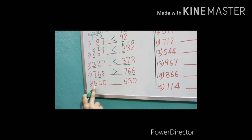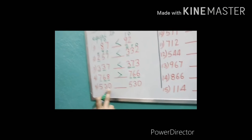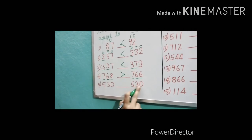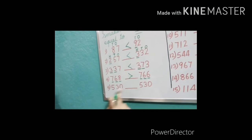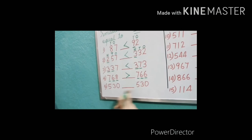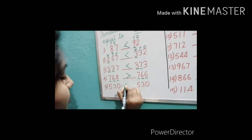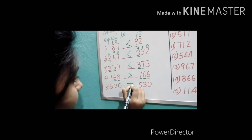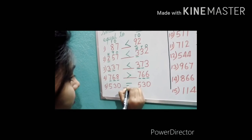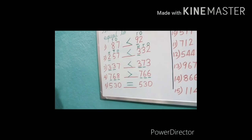Now the last one: 530 and 530. Both numbers are equal. So what will we do? We will put the equal to sign here.